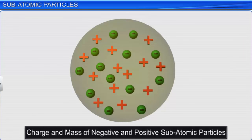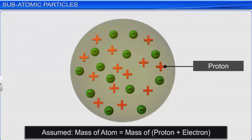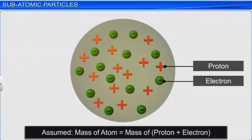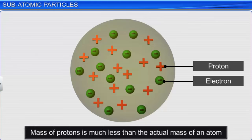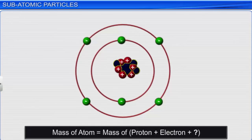By 1913, after considerable research on the charge and mass of subatomic particles, scientists tried calculating atomic mass. It was determined that the atomic number of an element equals the number of protons in its nucleus. It was thought that since each proton has one unit mass, the mass of an atom must equal the number of protons, as electrons have negligible mass. However, it was discovered that the mass of all protons in an atom is much less than the actual mass of the atom, so the excess mass was attributed to some other particles with considerable mass but no charge.